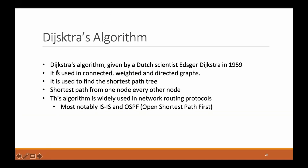Let's have a look at Dijkstra's algorithm. Dijkstra's algorithm was given by Dutch scientist Dijkstra in 1959. It is used in connected, weighted, and directed graphs. It is used to find the shortest path tree, and it finds the shortest path from one node to all the other nodes of the graph. This algorithm is widely used in network routing protocols such as OSPF and IS-IS.